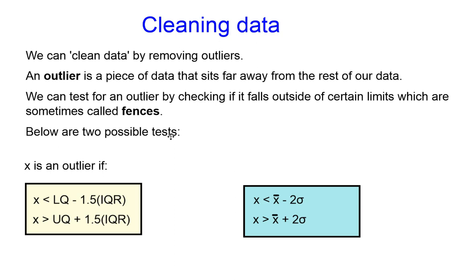Here are two possible tests. X is an outlier in this first test if it falls outside 1.5 interquartile ranges from our lower or upper quartile. So if it's less than our lower quartile minus 1.5 IQRs, or more than our upper quartile plus 1.5 IQRs, then we would say it's an outlier.